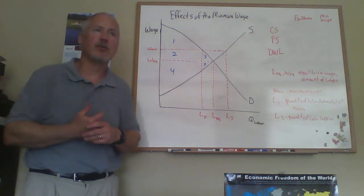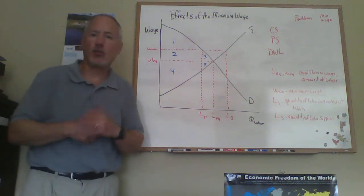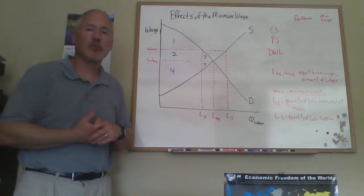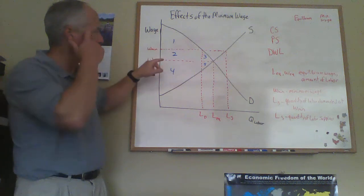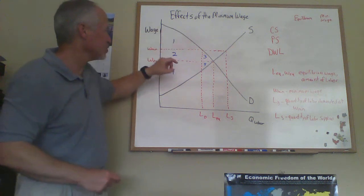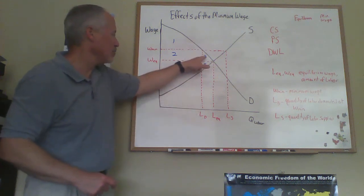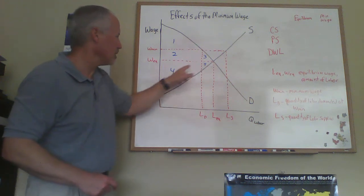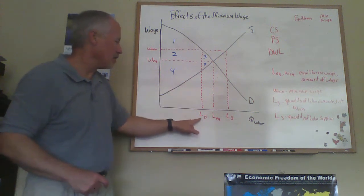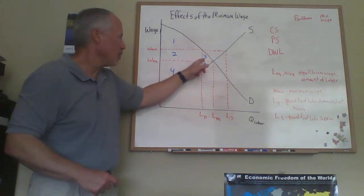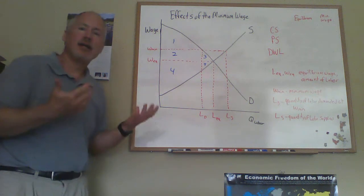So how many people would be hired in this market with the minimum wage in place? It would be LD. Since LD is smaller than LEQ, jobs would be lost to the minimum wage. When economists talk about jobs lost from the minimum wage, it's the difference between the equilibrium quantity and the quantity of labor demanded. Now, I've labeled the relevant areas on the graph using numbers: area 1 is this triangle above the dotted line; area 2 is this rectangle between W-min and W-EQ up to LD; area 3 is this triangle below the demand curve between LD and LEQ; area 4 is this trapezoid below the equilibrium wage and above the supply curve up to LD; and area 5 is this triangle between LD and LEQ below the equilibrium wage and above the supply curve.